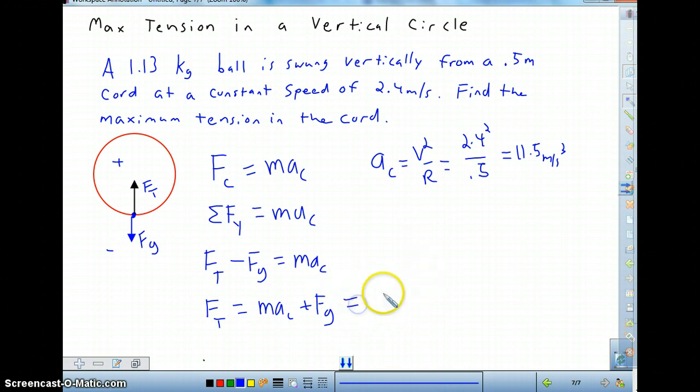And we'll just simply go 1.13 times 11.5 plus 1.13 times 9.8. And we get a tension out of about 24.1 newtons.